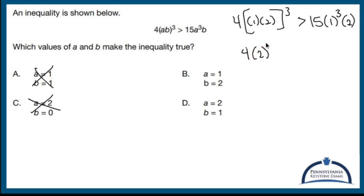So 4 times 2 to the third, those brackets don't need to be there anymore. 2 to the third is 8 because 2 times 2 times 2 is 8, not 6. And 4 times 8 is 32. I need to show that 32 is greater than whatever this is.